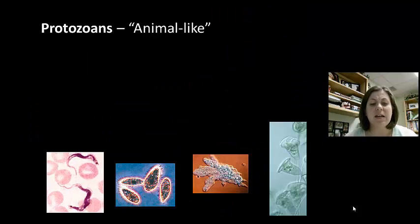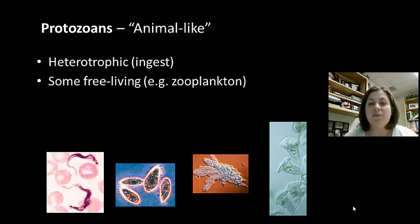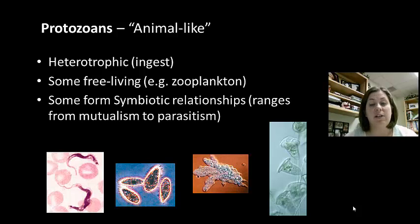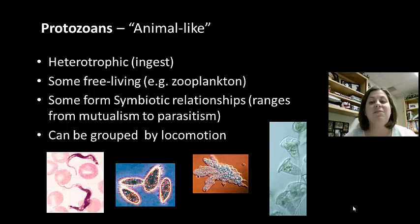We're going to discuss the protozoans first. These are heterotrophs via ingestion — they take their food into their bodies. Some are free-living such as zooplankton, but others form symbiotic relationships. Symbiotic relationships mean they work with another organism. Some are mutualistic, meaning both organisms benefit. Others are parasites, where one benefits and the other is harmed. Protozoans are classified by the way they move, by their type of locomotion.